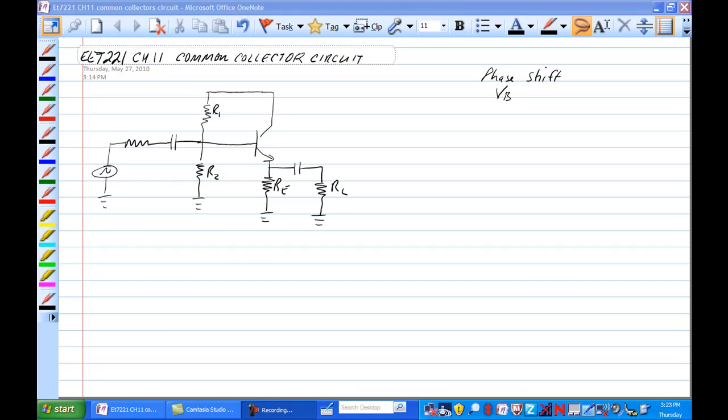This next circuit we're talking about is called a common collector circuit. It is a little different than the common emitter circuit that we've been dealing with in the past in that there is no RC and the load RL here is taken off of the emitter of the circuit, leaving a current path for the load like this.